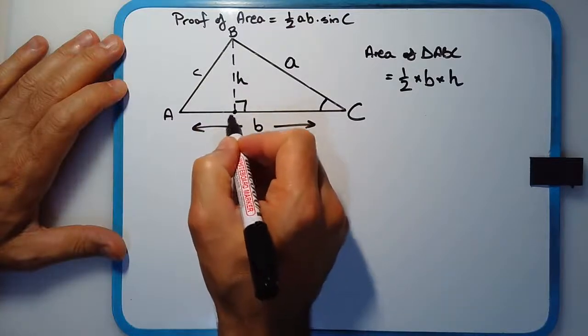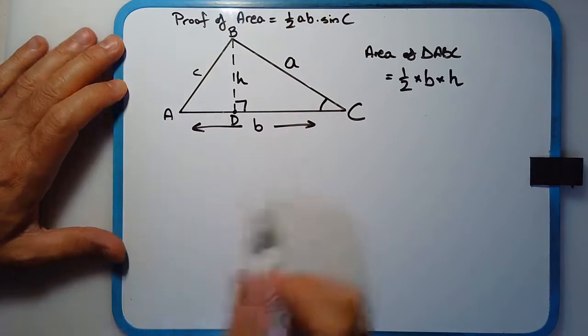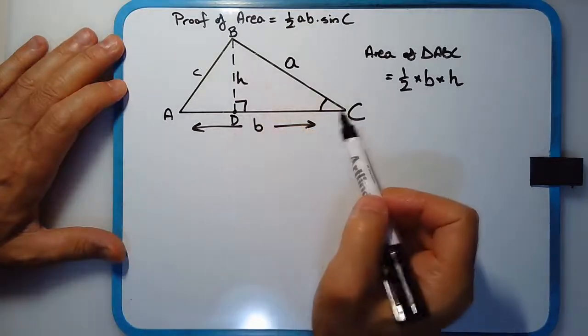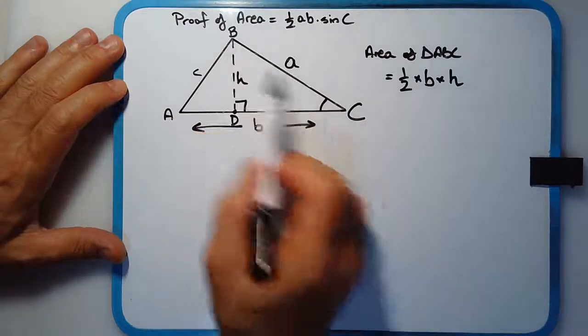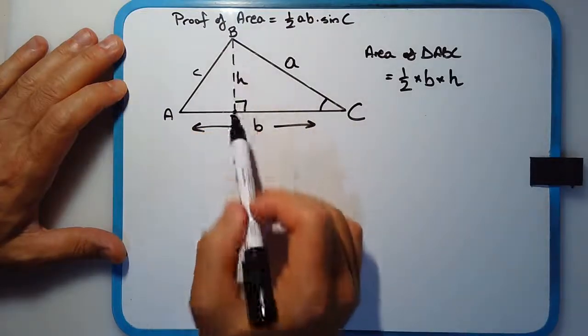In fact, I might just put a capital D there. So in triangle BDC, this side A is just the hypotenuse of this triangle, right angle triangle BDC.